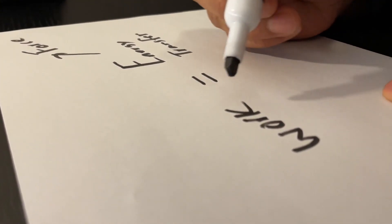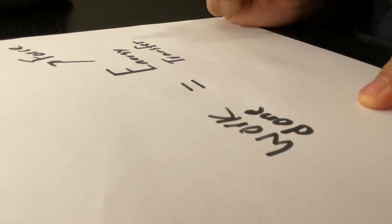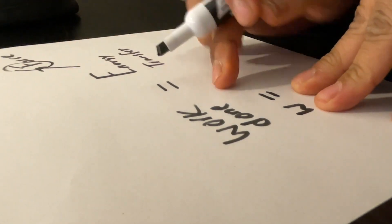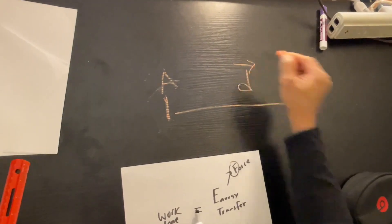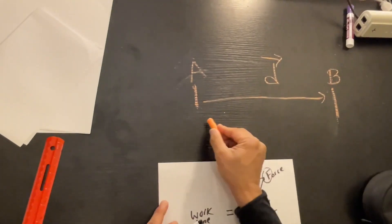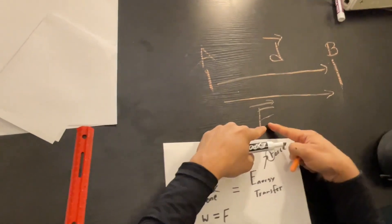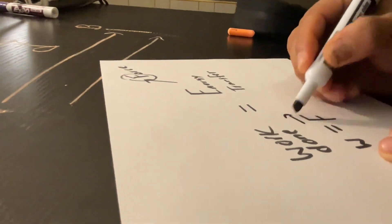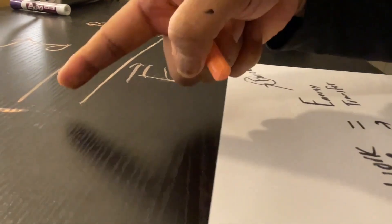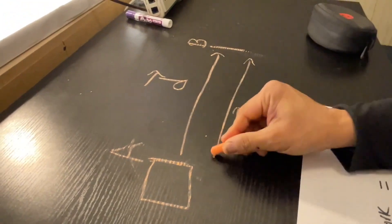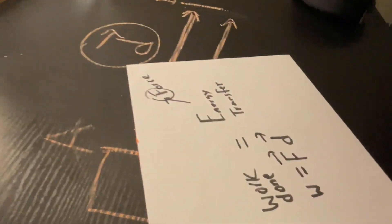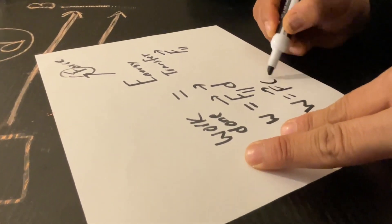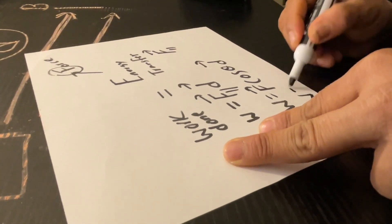Work done — I can write it as W. I apply force to transfer energy, and there was a displacement. The force vector and the displacement vector are parallel to each other. Using trigonometry, I can write the formula as F cosine theta times D, or simply F·D·cosθ.